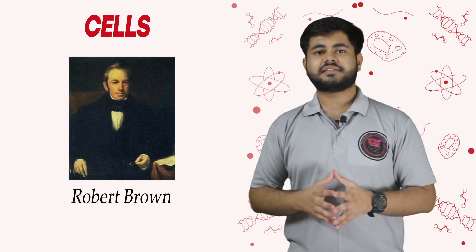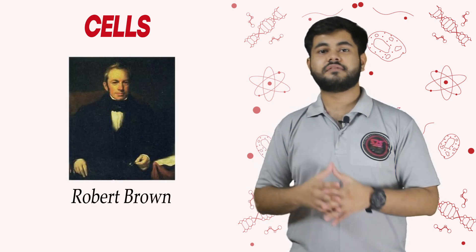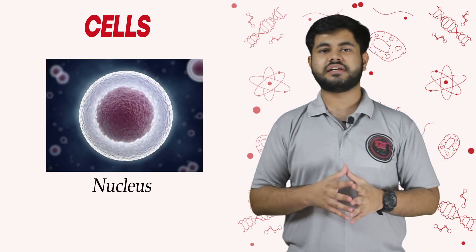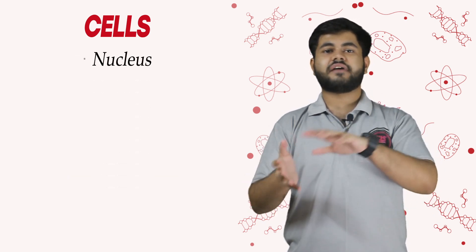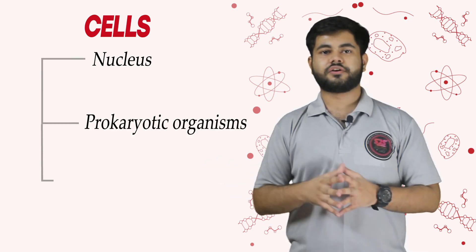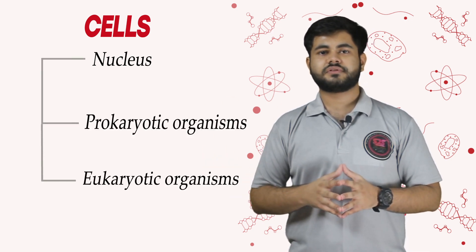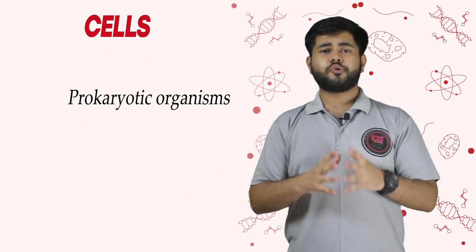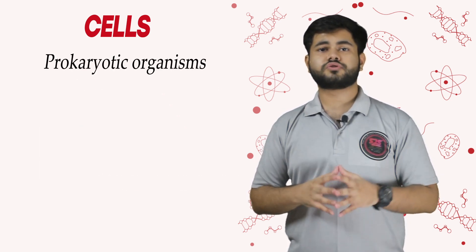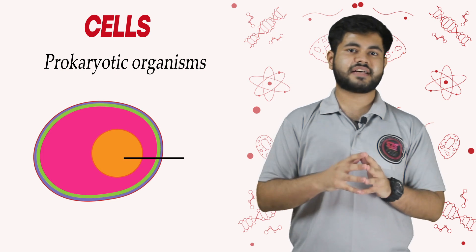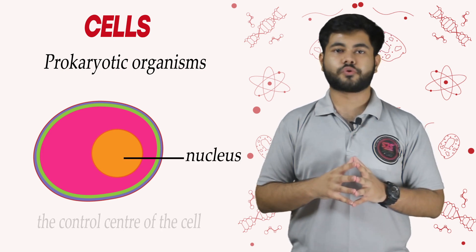Robert Brown discovered the nucleus inside the cell, and on the basis of this nucleus, organisms are divided into two types: prokaryotic and eukaryotic organisms. In prokaryotic organisms, the nucleus is primitive — the nucleus is known as the control center of the cell and is surrounded by a nuclear membrane.